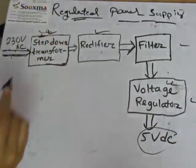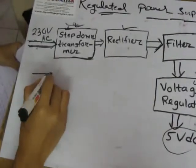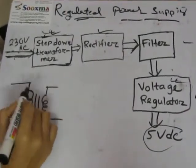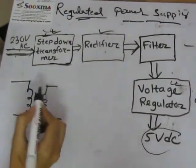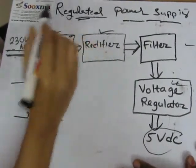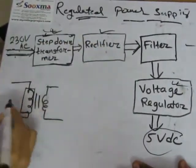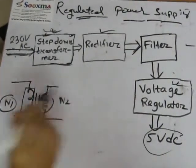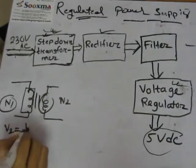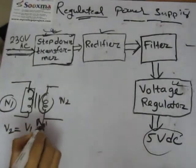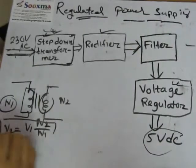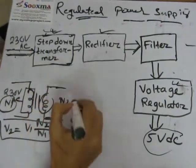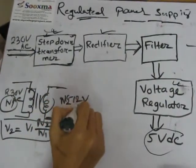Let's start from the step-down transformer. A transformer is a static device where we can change the voltage level without any change in frequency. Step-down transformer means the number of turns on the primary side, n1, is greater than on the secondary side, n2, so V2 equals V1 times n2 over n1. Our supply voltage is 230 volts AC and on the secondary side we get 10 to 12 volts.